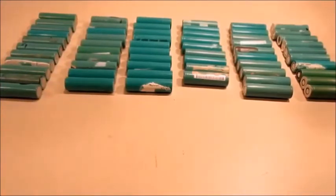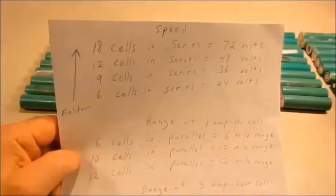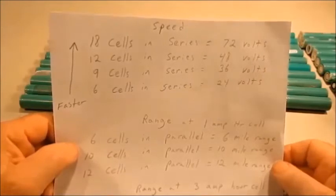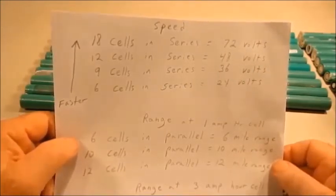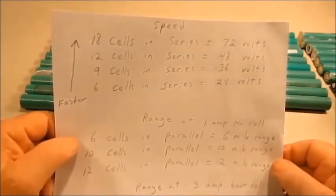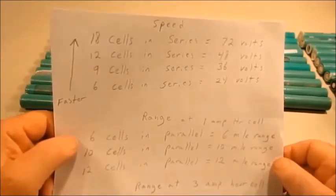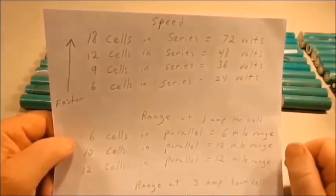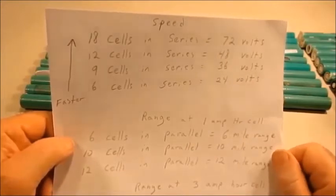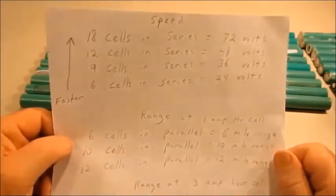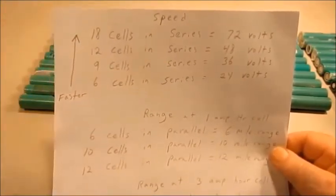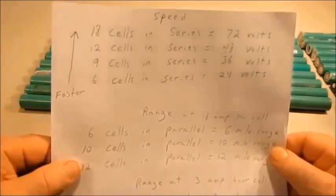Let's discuss speed versus range. If you had six cells in series at four volts per cell, that would be a 24 volt battery pack. Nine cells in series would be a 36 volt battery pack, 12 cells in series would be 48 volt battery pack, and 18 cells in series would be 72 volt power pack. The more cells you put in series, the faster you will go, but that's very different from range.